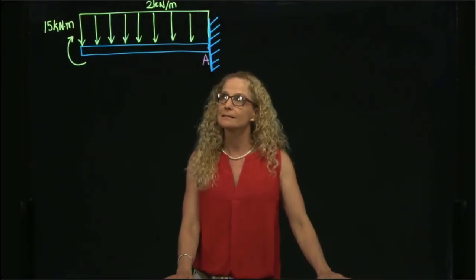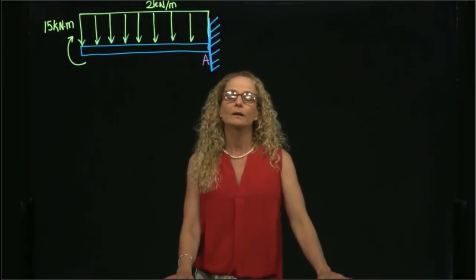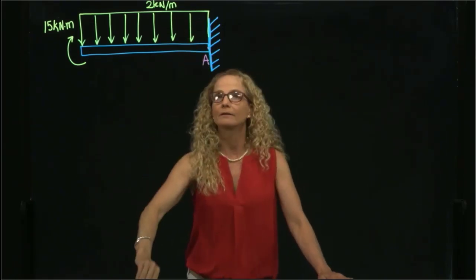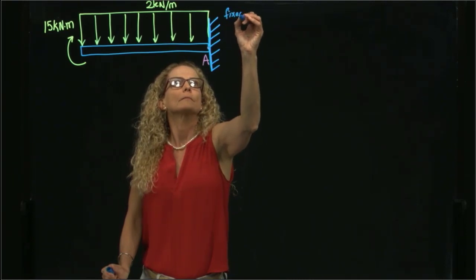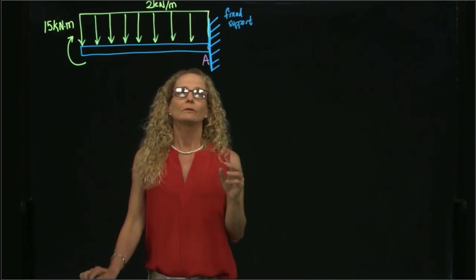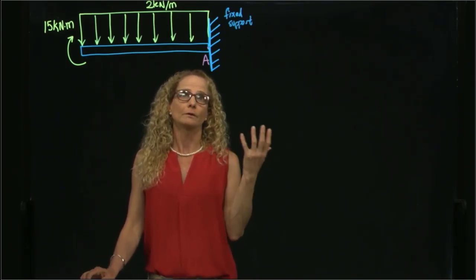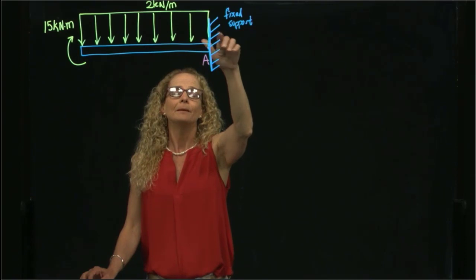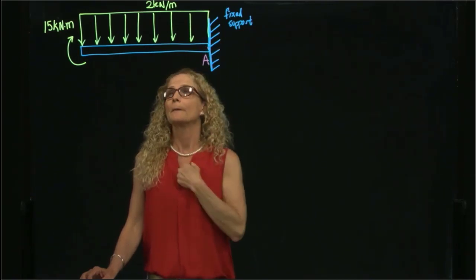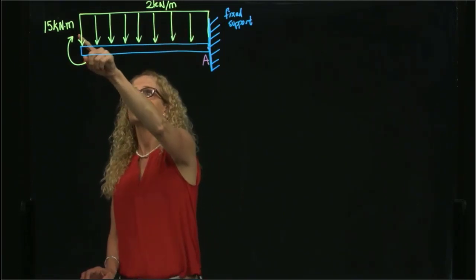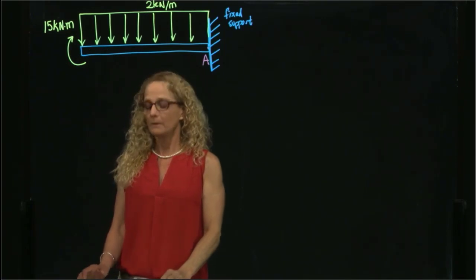This is problem 7.6, and we are drawing the shear and moment diagrams of these beams. In this case, we have a cantilever beam that has a fixed support at A. This is a fixed support, and this is important because a fixed support restricts three degrees of freedom: displacement in y direction, displacement in x direction, and rotation. So I have three reactions. Then we have a distributed load of 2 kilonewtons per meter, and a concentrated moment at the other end of the beam. Let's call this point B.